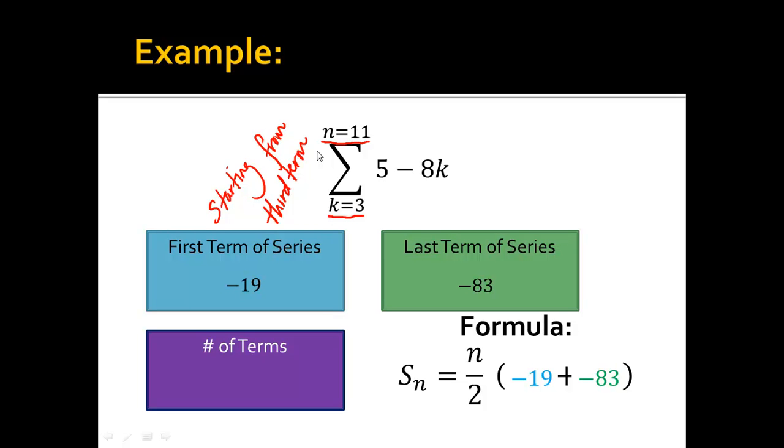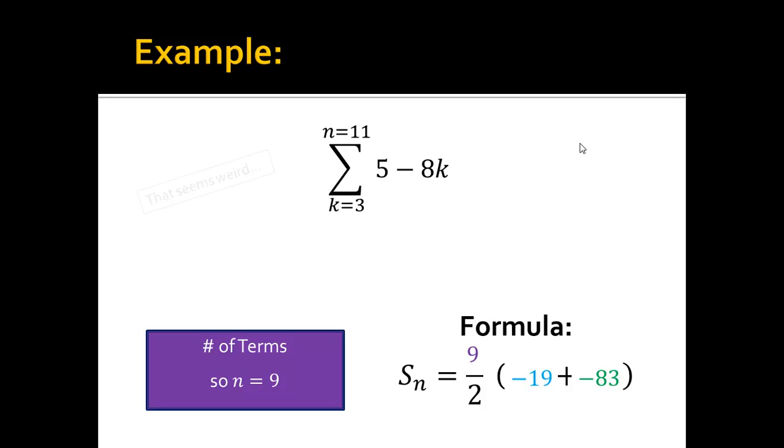So, now, for the number of terms. The number of terms. I'm going from the third to the 11th. So, what you would think, if I'm starting at the third and I'm going up to the 11th, you would think there's going to be 11 minus 3. You'd think there'd be 8 terms. But, there's actually going to be n equals 9 terms. And, this is a little unsettling. So, everywhere I see an n, I put a 9 in its place. It seems weird. And, that's because it totally is weird.